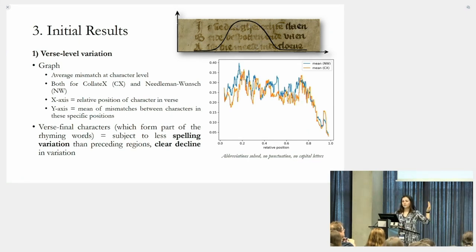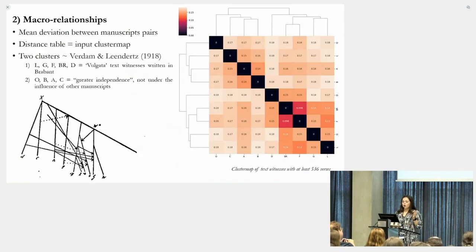This is the first level variation. We also looked at the macro relationships between manuscripts. We took the mean deviation between manuscript pairs, comparing A with B, A with C, A with T. We took that to create a distance table, which forms the input for this cluster map. We see two main clusters: L, G, F, B, R, and D, and on the other hand, O, B, A, and C. This is in line with what we know from the transmission of the Martijn trilogy so far.